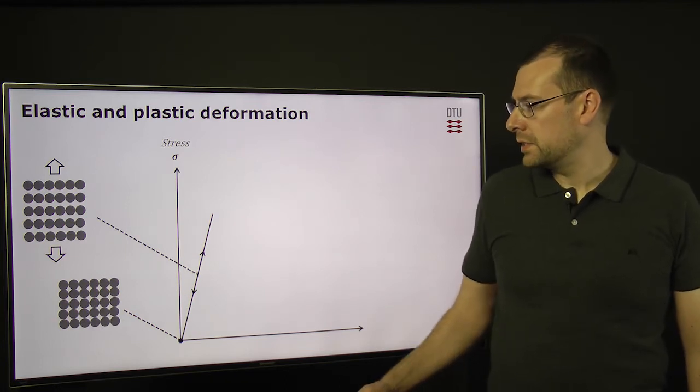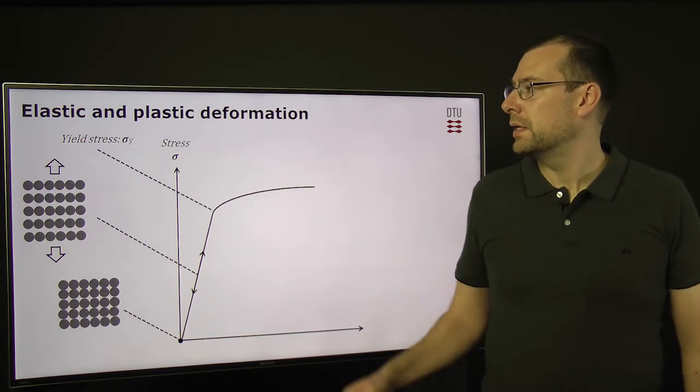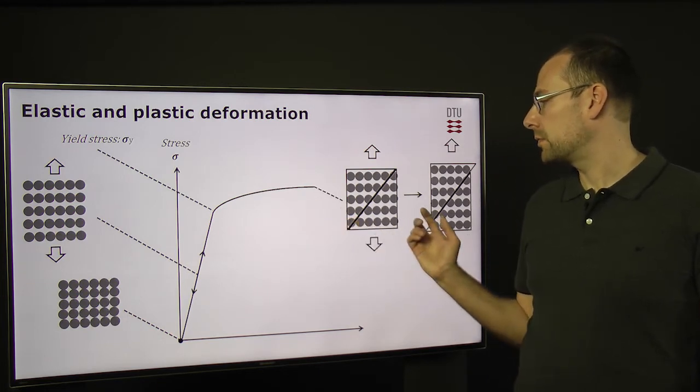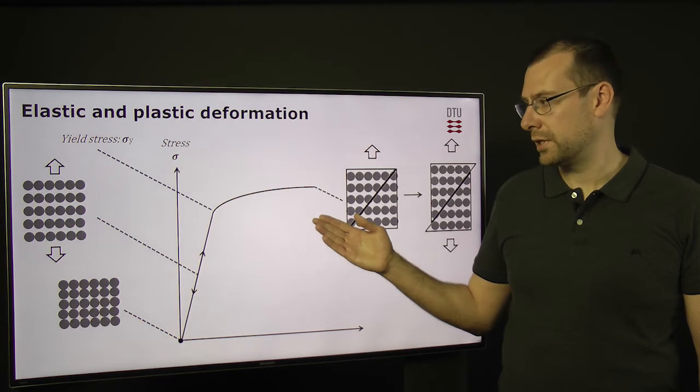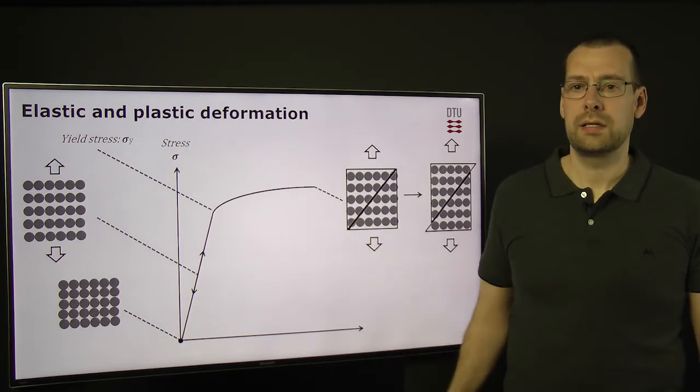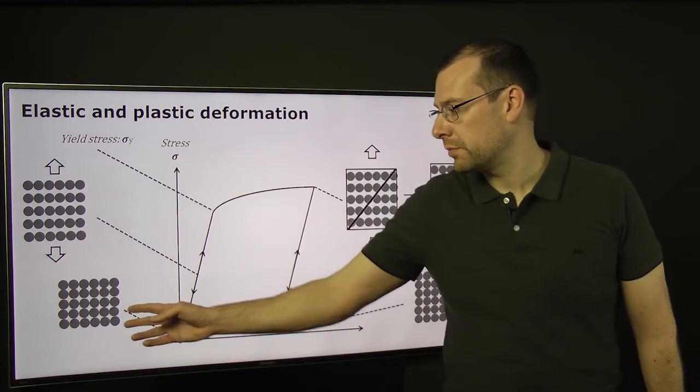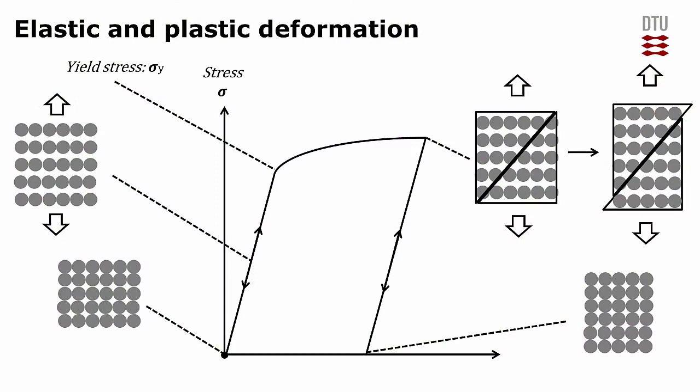If we increase the stress, then we will reach a certain point called the yield stress. And here we will actually break the atomic bonds. So this is called plastic deformation, and this is permanent. So if we relax our lattice here, then we will not go back to the original shape. We will have a new lattice shape. So we have permanently deformed our material.